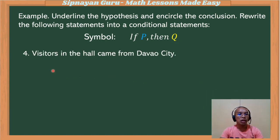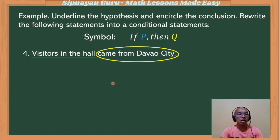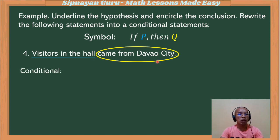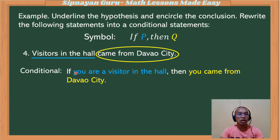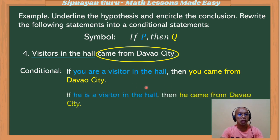Example number four: 'Visitors in the hall came from Dabao City.' 'Visitors in the hall' is our hypothesis, and 'came from Dabao City' is our predicate and conclusion. Our conditional statement would be: 'If you are a visitor in the hall, then you came from Dabao City.' Or alternatively: 'If he is a visitor in the hall, then he came from Dabao City.'